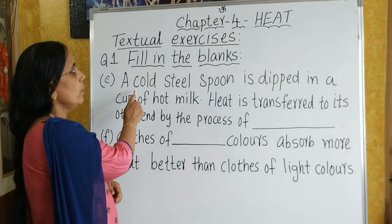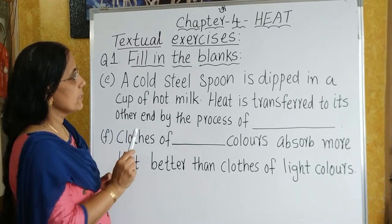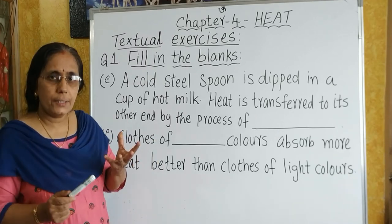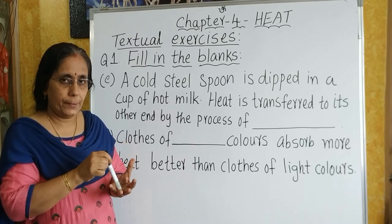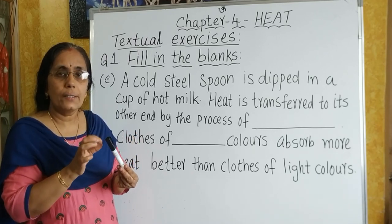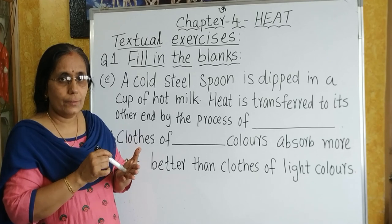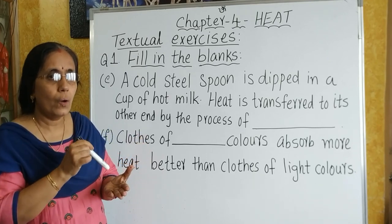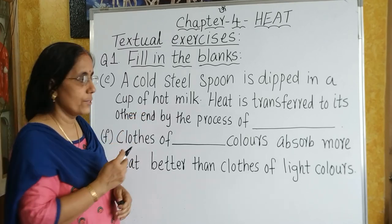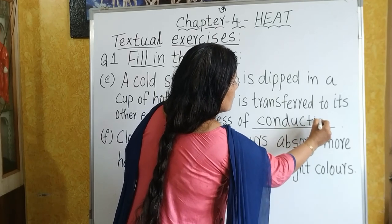The next one is: a cold steel spoon is dipped in a cup of hot milk. Heat is transferred to its other end by the process of dash. One end is dipped in the hot milk — how does the other end of the spoon get hot? The conduction process needs contact, and the spoon is in contact with the hot milk. Therefore, the heat transfer takes place by the process of conduction.